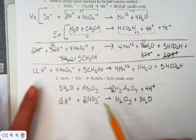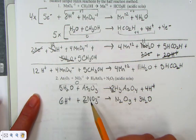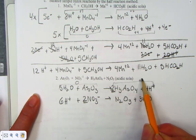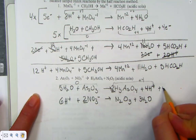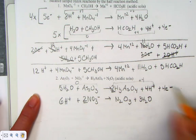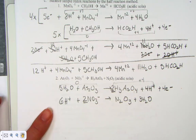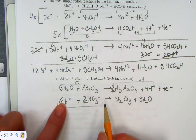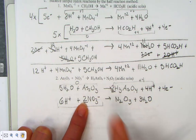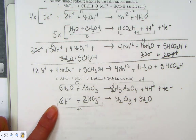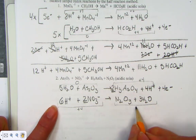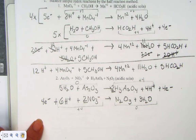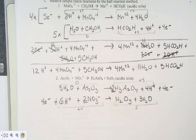Let's balance by charge. For the first half-reaction, the left side is 0 and the product side is plus 4, so we add 4 electrons to the product side bringing it down to 0. For the second half-reaction, 6 positive protons with 2 units of minus 1 give a net plus 4 on the left, and the right is 0, so we add 4 electrons to the left to bring it down to 0.